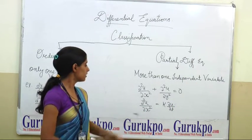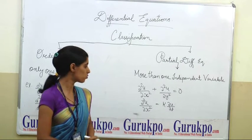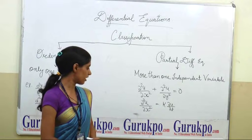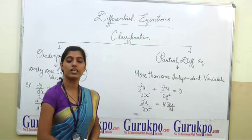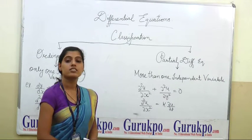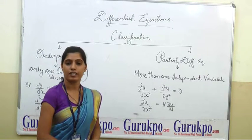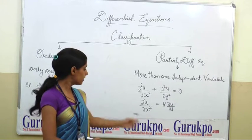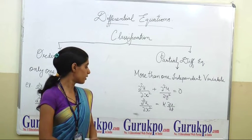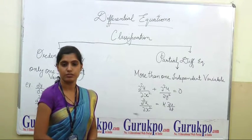For partial differential equations: ∂²u/∂x² + ∂²u/∂y² = 0, and the second example, ∂²u/∂x² = k · ∂u/∂t. Here u is the dependent variable; x and y are independent variables in the first, and x and t are independent variables in the second.